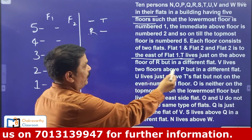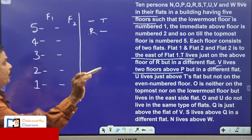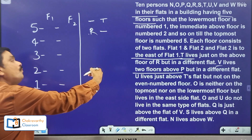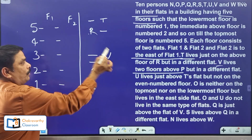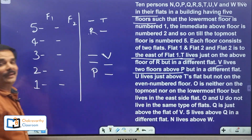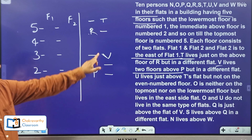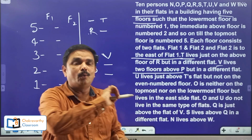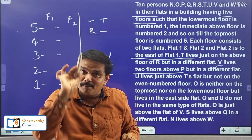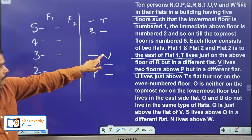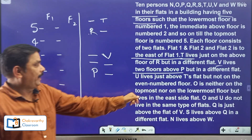The next information: V lives two floors above P, but in a different flat. Suppose this is P — V lives two floors above, but on a different flat. Remember students, V lives two floors above P does not mean that between V and P there are two floors. When V lives two floors above P, between these two only one floor will be there. They have given V is above P but on a different flat. This is the same type of information as before.